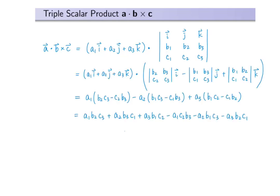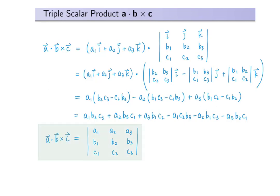To proceed, we will expand this determinant and then perform the dot product of vector A with this new vector. After rearranging the terms, we get this result. In fact, if we observe it more closely, we realize that it's the same as computing this determinant with vectors A, B, and C in the first, second, and third row respectively. It's much simpler. Therefore, A dot B cross C can be obtained by this formula.